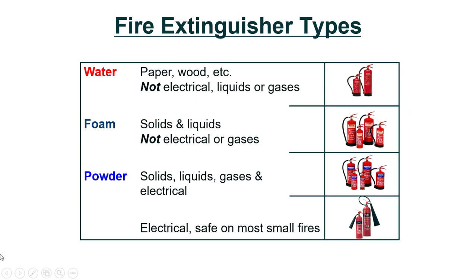Fire extinguisher types — we know the classes of fire. For solid fuel such as paper and wood, water is mainly used. Foam is used for Class A and Class B fire — solid and liquid. Powder is common for all classes of fire: Class A solid fire, Class B liquid fire, Class C gaseous fire, and even for electrical fire.